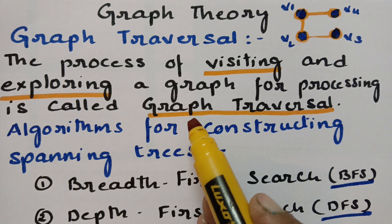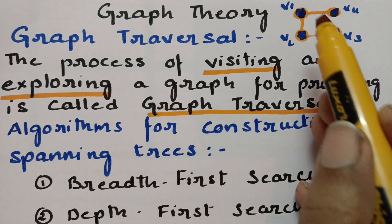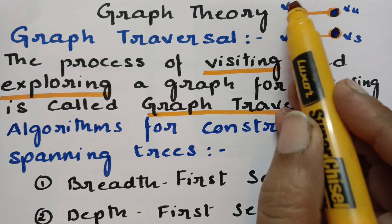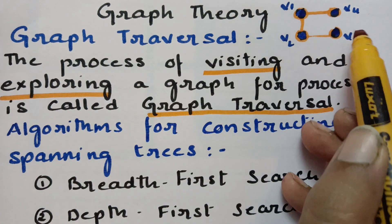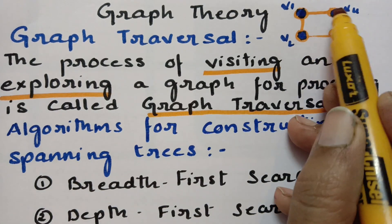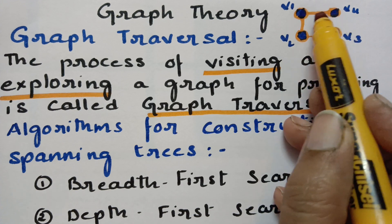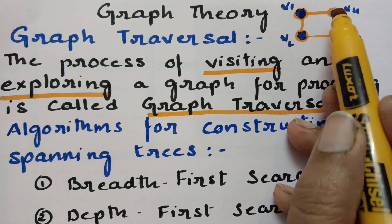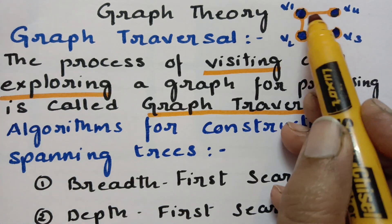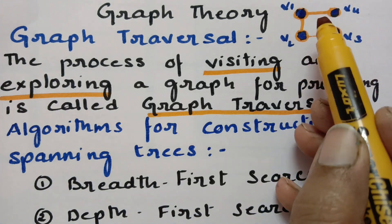So what is a graph first of all? It is a connection between the vertices and the edges. So how many vertices are there? V1, V2, V3, and V4. These two vertices are connected by an edge line. So the interconnection between the vertices and the edges is called the graph.